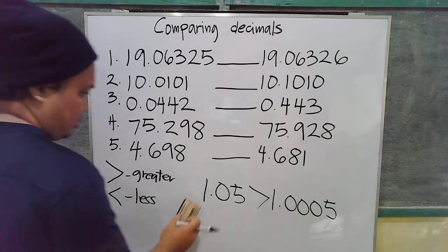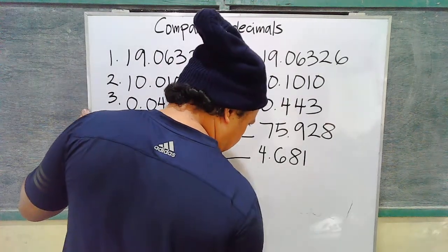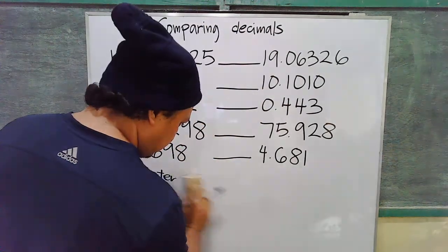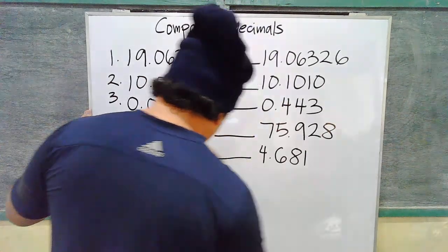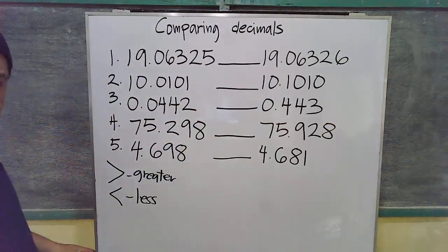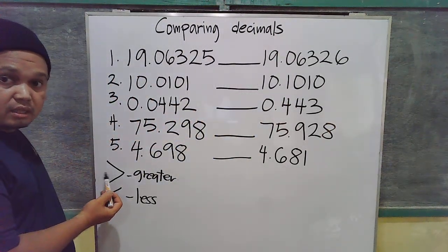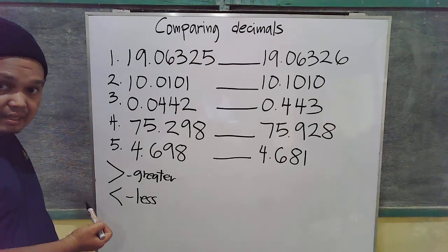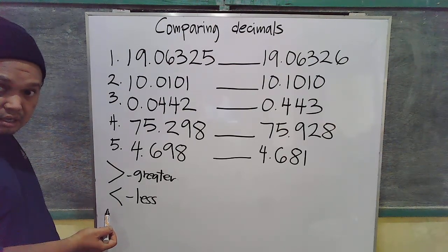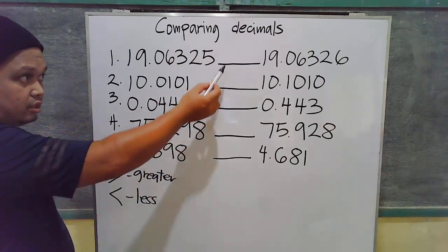For example, 1.05 compared to 1.0005. The 5 here is closer to the decimal point compared to the 5 there, which needs three steps to get to the decimal point, but this one only needs one step. So this decimal number is greater. The symbol for greater than is this, and the symbol for less than is this.